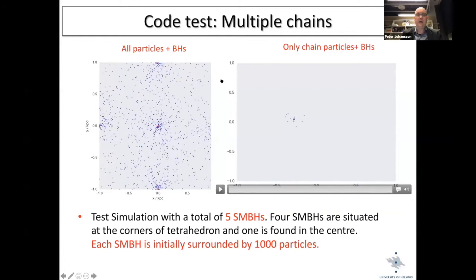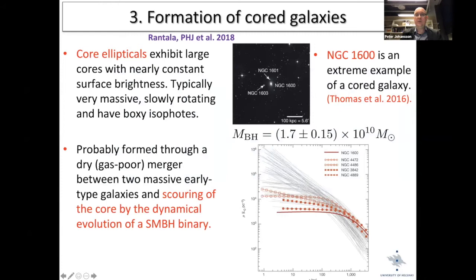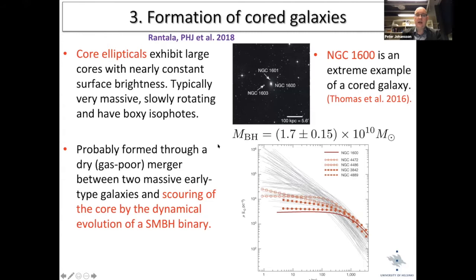Let's go to some actual results. One of the first problems we studied was the formation of core elliptical galaxies. These are among the most massive galaxies in the universe, known for having a huge deficit of light in the center. Here are typical surface brightness profiles of elliptical galaxies — the core ellipticals in red have a nearly constant surface brightness, are typically very massive, slowly rotating, have boxy isophotes, and very massive black holes.